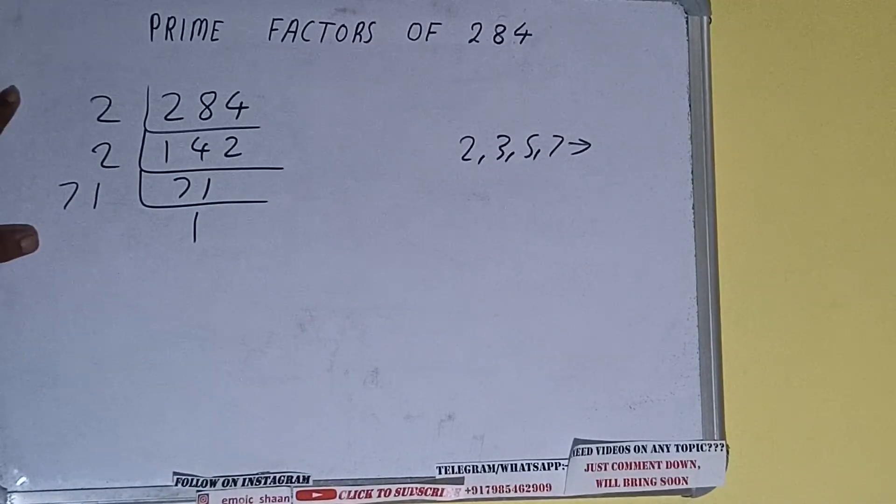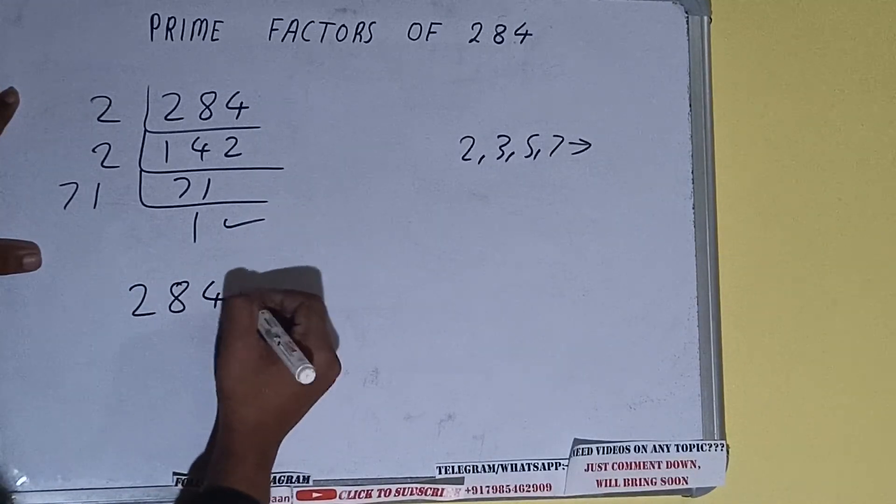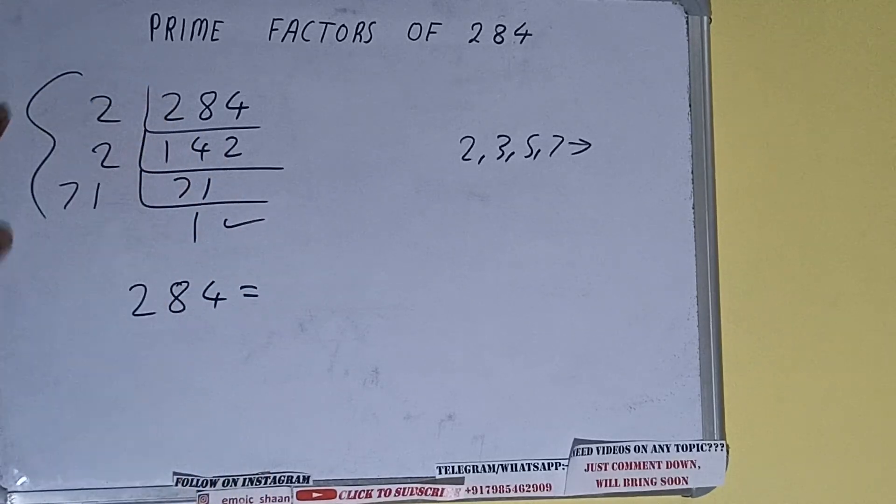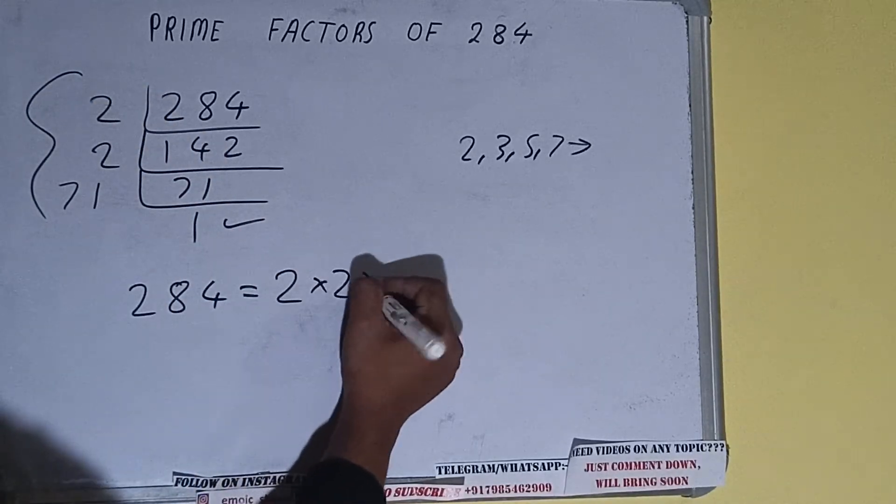Once we get 1, we need to stop and do one last thing. That is, prime factors of 284 is equal to multiply whatever we have on the left-hand side: that is 2 × 2 × 71. That will be the answer.